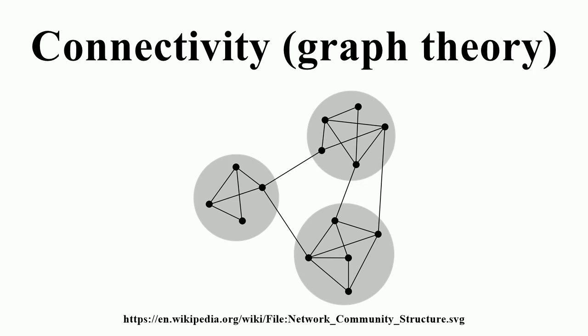Moreover, except for complete graphs, kappa equals the minimum of kappa over all non-adjacent pairs of vertices U. Two-connectivity is also called bi-connectivity and three-connectivity is also called tri-connectivity.